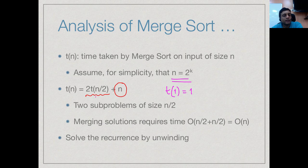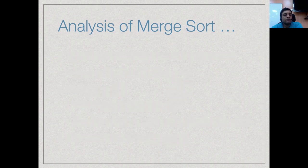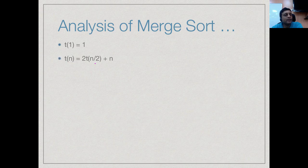Given the recurrence T(1) = 1 and T(n) = 2·T(n/2) + n, how do we solve it? The simplest way is to keep expanding using the same expression until we reach the base case. We start with T(n) = 2·T(n/2) + n and then use the same equation to expand T(n/2).